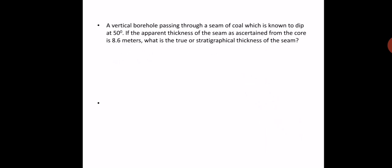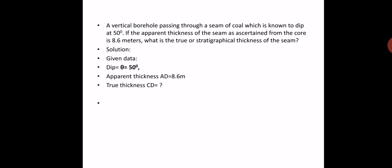Now I am going to take a small problem. A vertical borehole passing through a seam of coal is known to dip at 50 degrees. He tells us there is a borehole passing through a seam with a dip of 50 degrees with the horizontal. The apparent thickness of the seam ascertained from the core is 8.6 meters. What is the true or stratigraphical thickness of the seam?